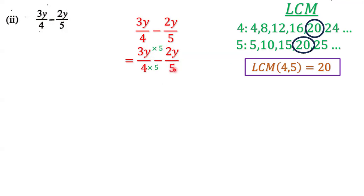5 times 4 is definitely 20. And we have 3y times 5, which is definitely 15y. And we have 5 times 4, which is definitely 20. And 2y times 4 is definitely 8y.